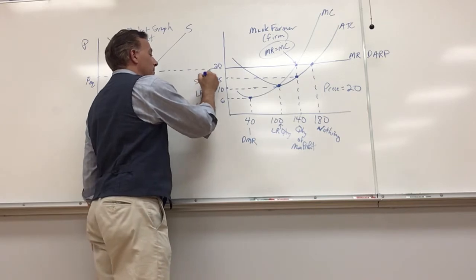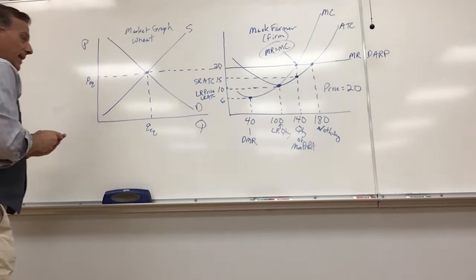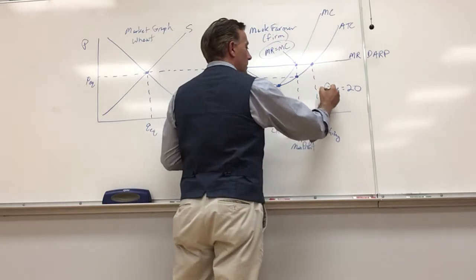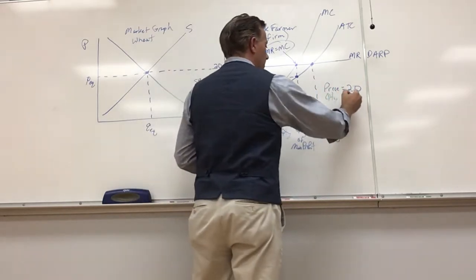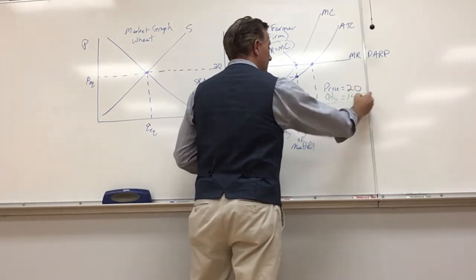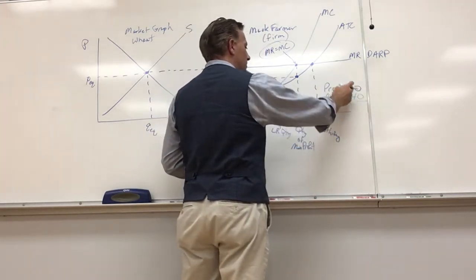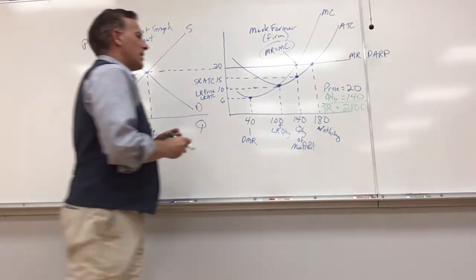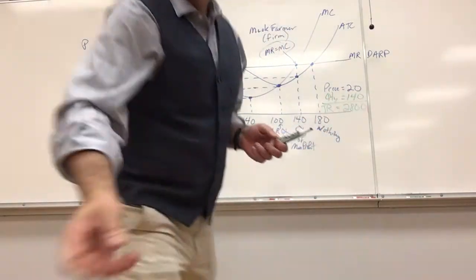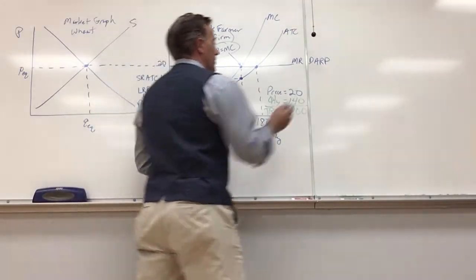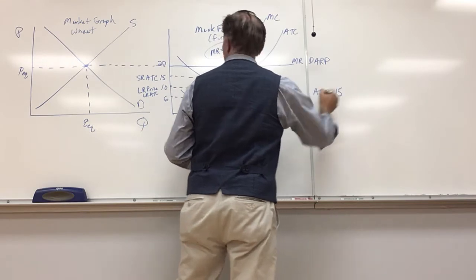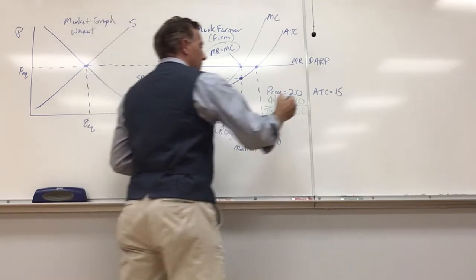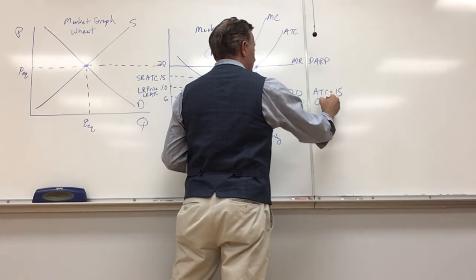I come up and boom, here's my average total cost, and that is 15. That's my ATC in the short run. I'm creating my rectangles. My price is 20, my quantity is 140. My total revenue in the short run is 20 times 140, which is 2800. My average total cost is 15 in the short run times 140, which is 2100.